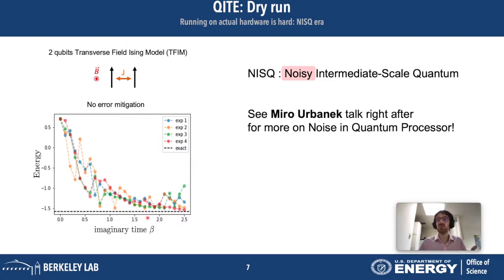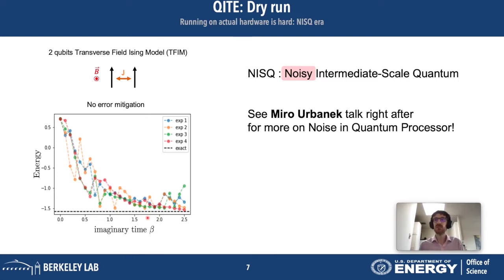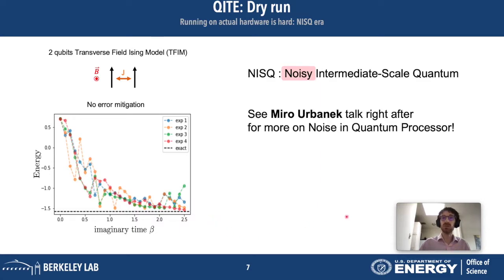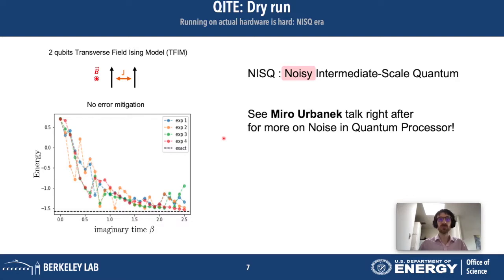This is a more general problem of current quantum devices. Current quantum devices are called NISQ devices — noisy intermediate scale quantum devices — and the 'noisy' in that name is what I want to insist on. This is why we have this kind of erratic curve. Just after me there is a talk by Miro Urbanek that will also discuss noise in quantum processors.